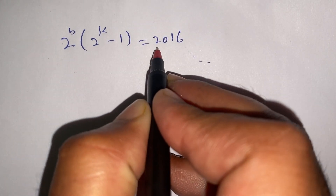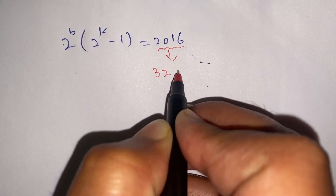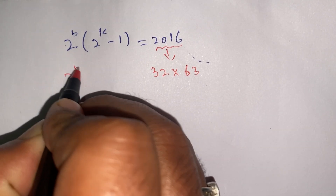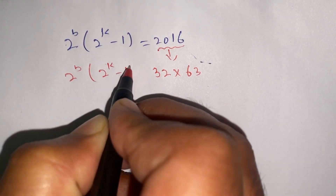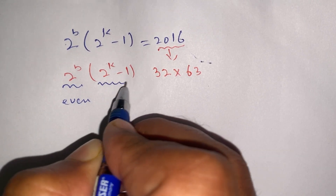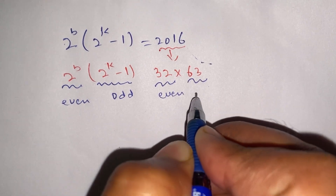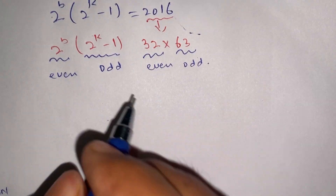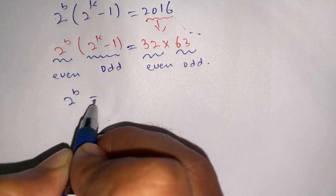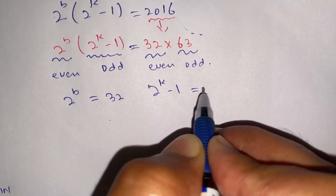Now we can break down 2016. We have 2016 equals 32 times 63. Our left-hand side is 2^b times (2^k minus 1). Note that 2^b is even, and (2^k minus 1) is odd. We compare even to even and odd to odd. On comparing, we get 2^b equals 32 and 2^k minus 1 equals 63.